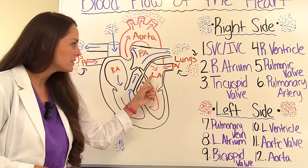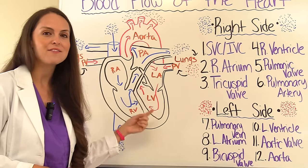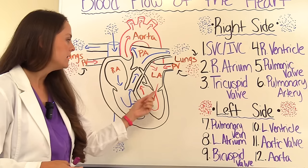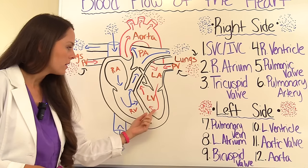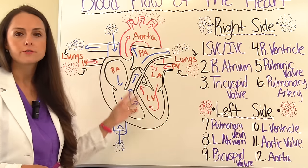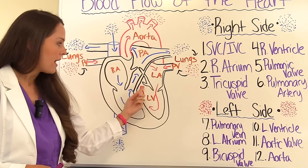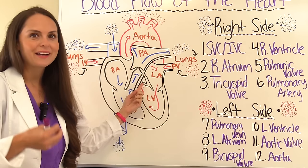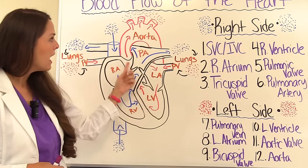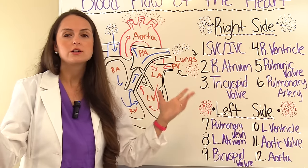Then it goes down through the left atrium and through another valve — the bicuspid valve, also called the mitral valve. Then it goes down through the left ventricle and is shot up through the aorta. But in order to get up through the aorta, it has to go through the aortic valve. So it crosses through the aortic valve, up through the aorta, and then it's going to replenish your organs and your tissues.